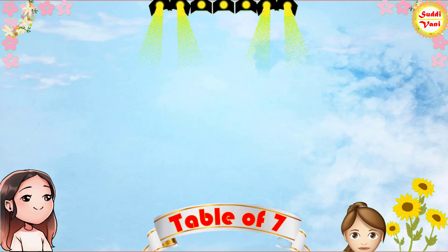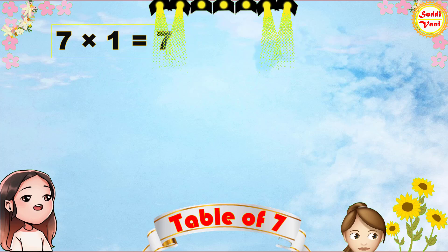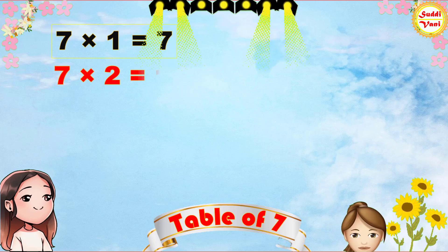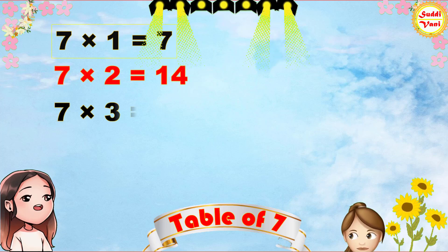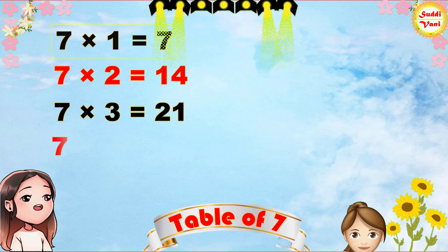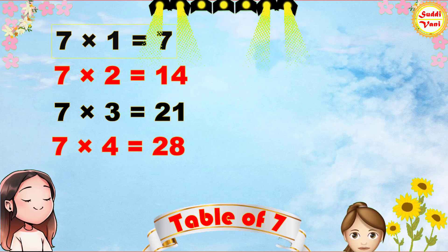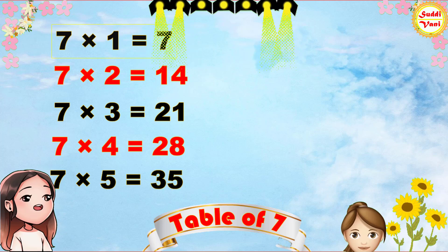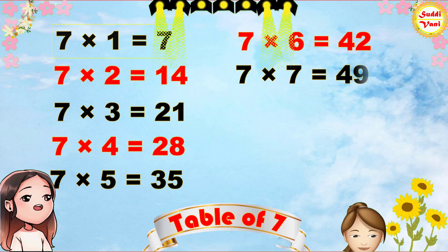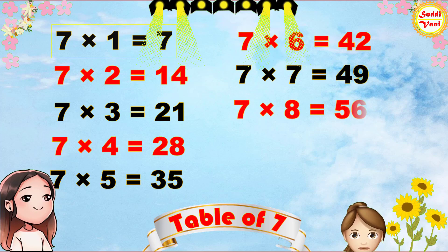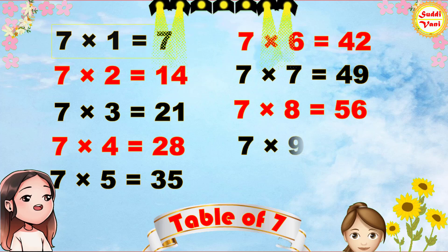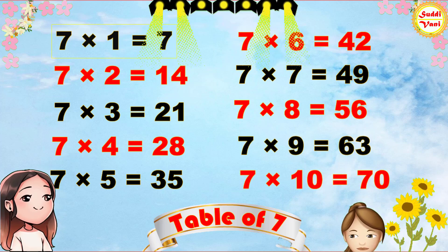Once again. 7 1's are 7, 7 2's are 14, 7 3's are 21, 7 4's are 28, 7 5's are 35, 7 6's are 42, 7 7's are 49, 7 8's are 56, 7 9's are 63, 7 10's are 70.